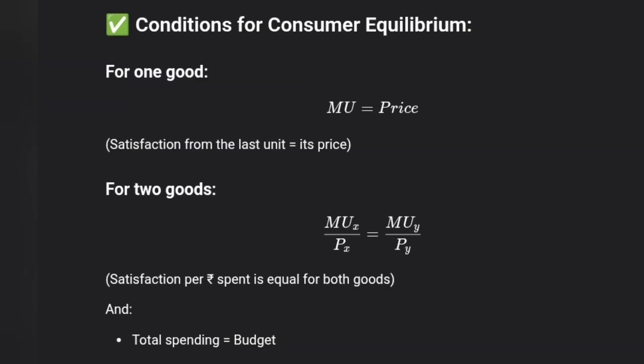The conditions for Consumer Equilibrium are: first, MU equals Price — satisfaction from the last unit equals its price. For two goods, MU of mangoes divided by Price of mangoes equals MU of bananas divided by Price of bananas — satisfaction per rupee spent is equal for both goods. And total spending must equal the budget.